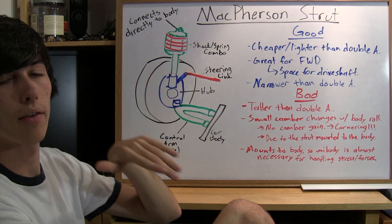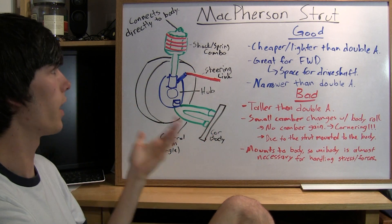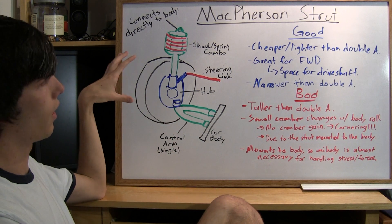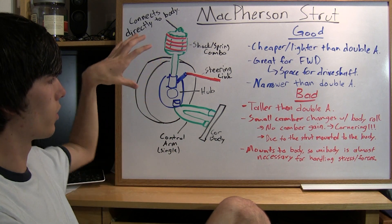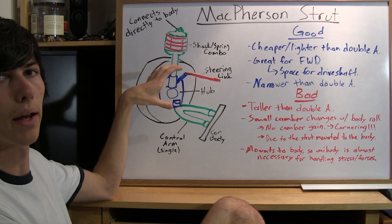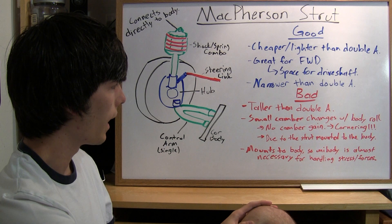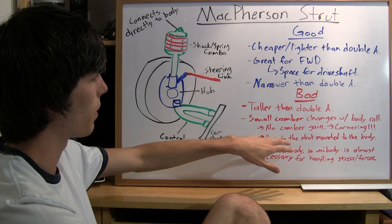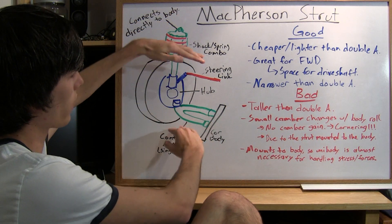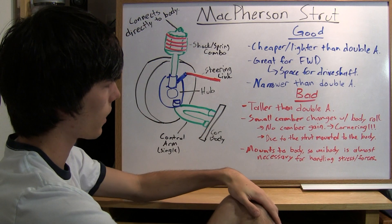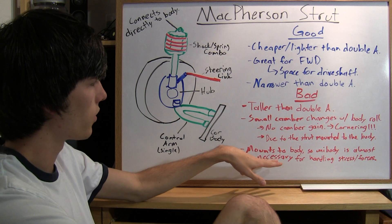In cornering, when you have a lot of body roll, this is a downside of the McPherson strut. The double wishbone suspension will maintain contact with the road better with heavy body roll. This is because the strut is mounted directly to the body, so you don't have that control arm where you can move the tire up and down as much. You only have the compression of the shock.